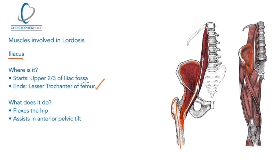The iliacus starts in the upper two-thirds of the iliac fossa. Don't worry about the technical terms — the lesser trochanter is the top of the femur on the inside, and the upper two-thirds of the iliac fossa is essentially the inside of the pelvis bone in that area. Again, what it does is flex the hip.